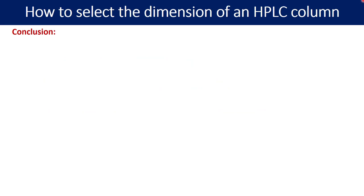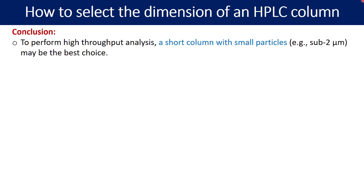So what is the final conclusion? Having understood all these parameters and their impact onto the chromatography, let us now conclude how this can be further selected during the HPLC method development. To perform high throughput analysis, a short column with small particles, example sub 2 micron, may be the best choice. If you are looking for shorter run times, you should go with the short column and with the small particle size.